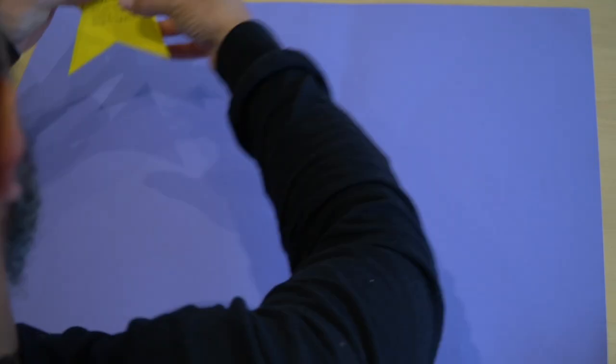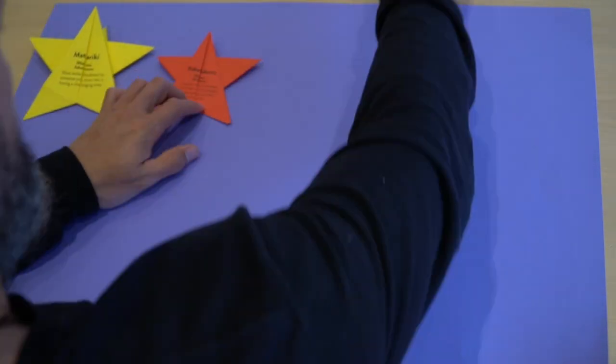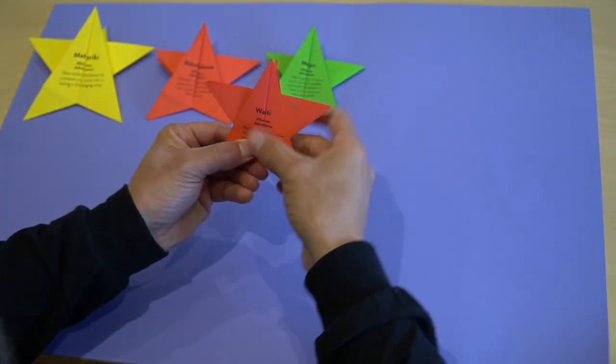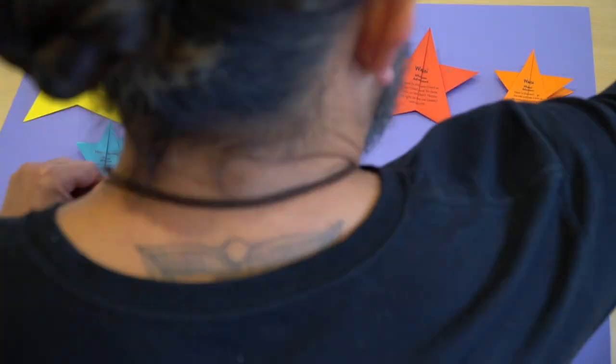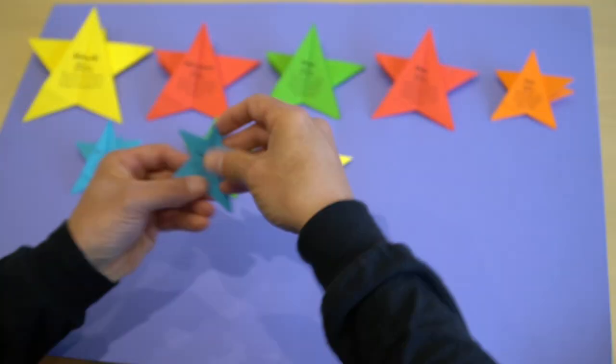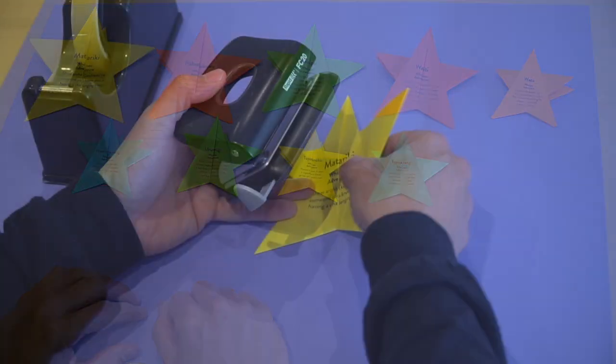The stars of Matariki mark the new year for Māori. Not only that, but these special stars also foretell the year ahead. Each star represents bounty or kai and lets us know what will grow, what will harvest well and where to spend the most time and attention.